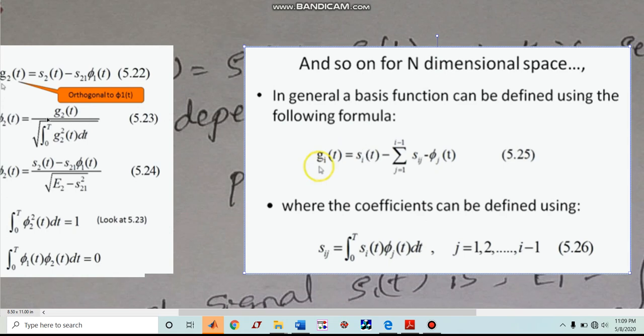Then we will move back to Phij of t equation. We will substitute for Gi of t here. Here it will be G3. Again, here it will be G3 of t whole square. And simplify, we will get the third orthonormal basis function. Likewise, fourth one also we can calculate by substituting here 4 and simplifying this equation and finding out the coefficients of the signals.